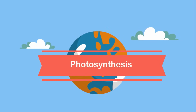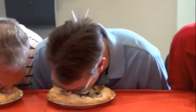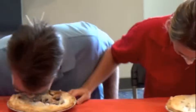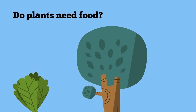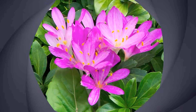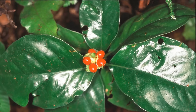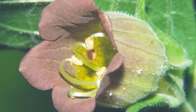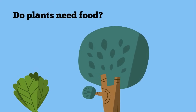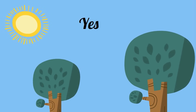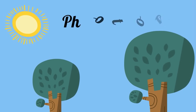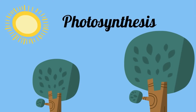In order to stay alive, we need to eat food. Do these plants also need food? Yes, but how do they get food by just standing around in the sunlight all day? Plants get their food in a process called photosynthesis.